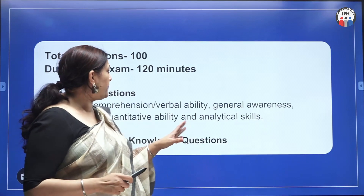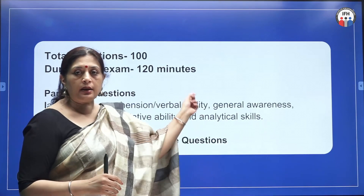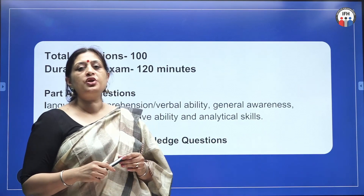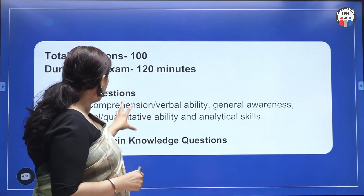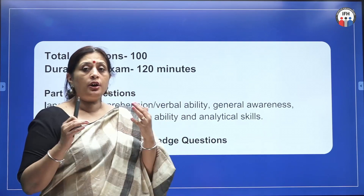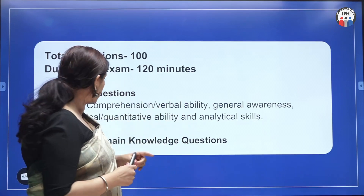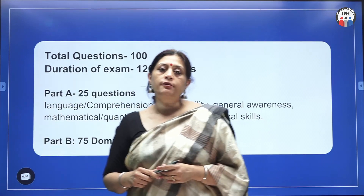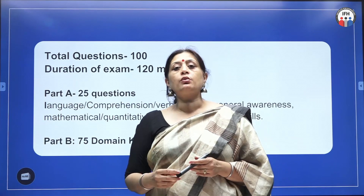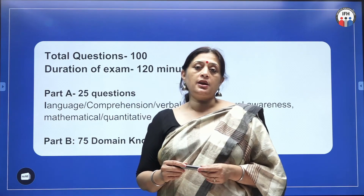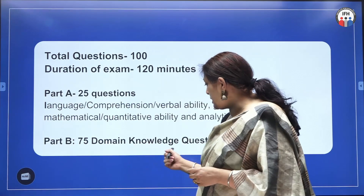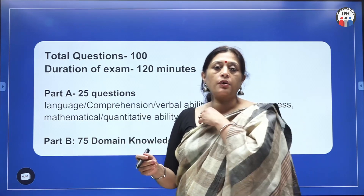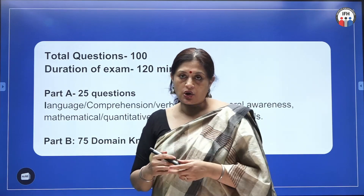When you apply for Delhi University, these marks will be counted. However, in the case of JMU, they do not count Part A marks. The important part is the 75 questions which are going to come from your domain knowledge, because you are going to do PG in the subject — so domain knowledge carries greater weightage.